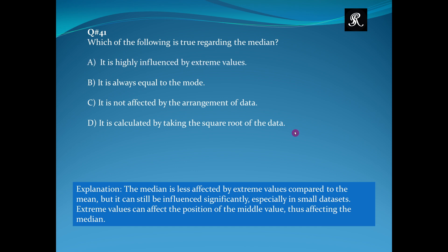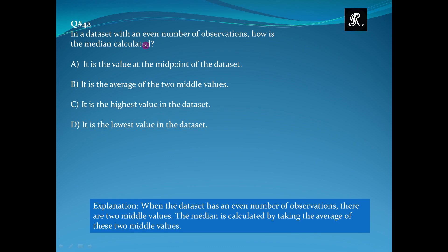In a data set with an even number of observations, how is the median calculated? It is the value at the midpoint of the data set. It is the average of the two middle values. It is the highest value in the data set. It is the lowest value in the data set. The right option is option B: it is the average of the two middle values.